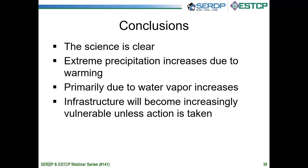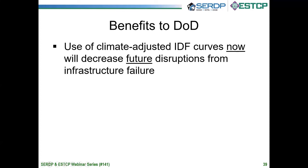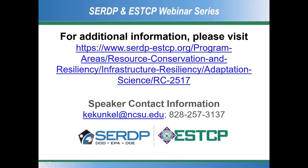In conclusion, I would contend that the science is clear that extreme precipitation increases due to warming, and this primarily arises from increases in atmospheric water vapor. How does this benefit DOD? Use of climate-adjusted IDF curves now for infrastructure development will decrease future disruptions from infrastructure failure. Thank you for your attendance at this seminar.